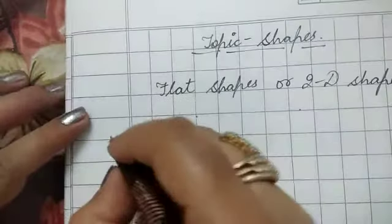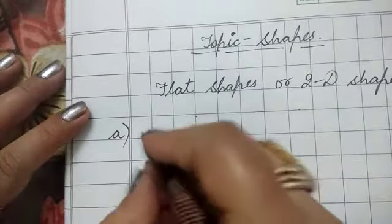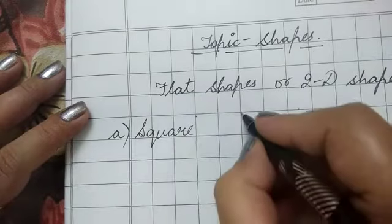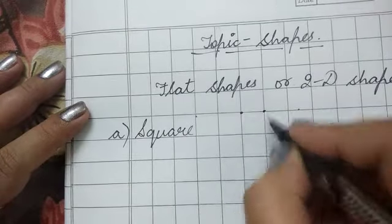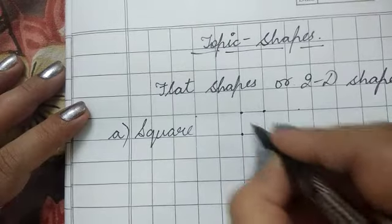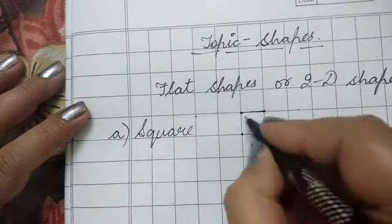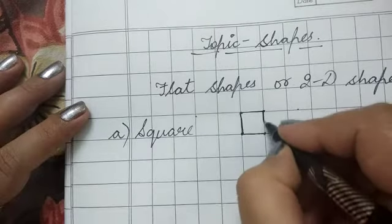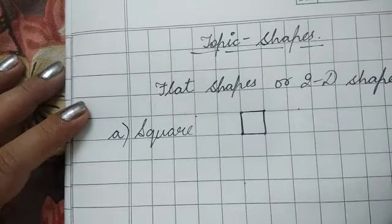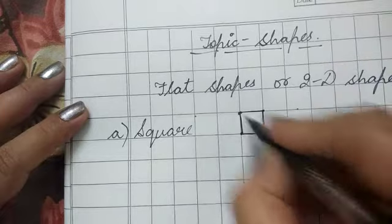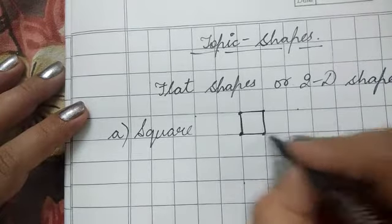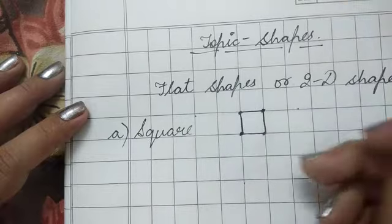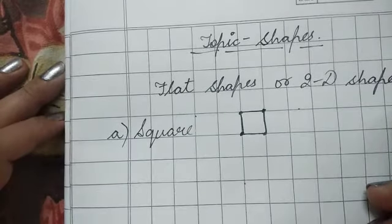First one is square. This is the square. It has four corners and four sides, and all the sides of square are equal.